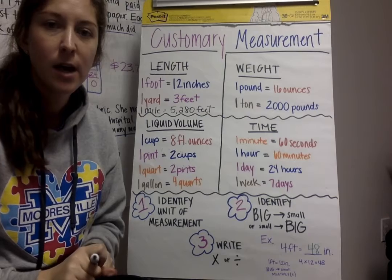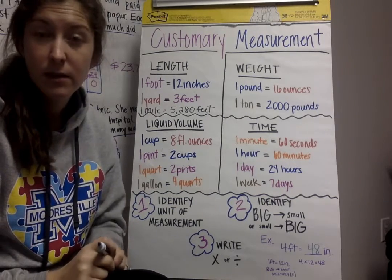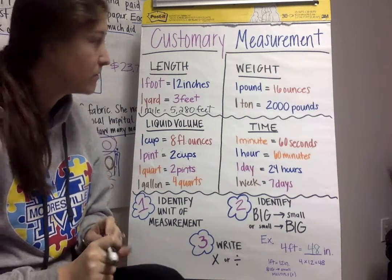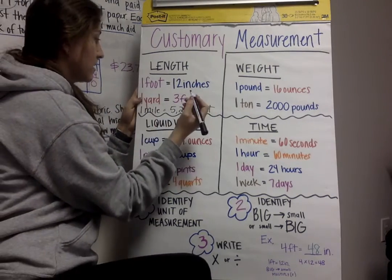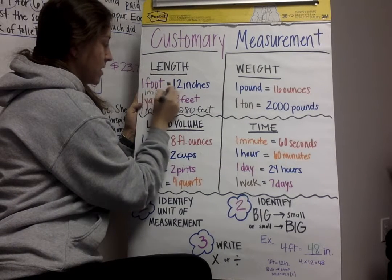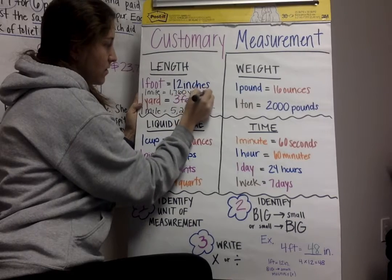So there's also one mile, there's 1,760 yards in a mile. So that's also something that you'll need to know. Let me add that one in there. One mile equals 1,760 yards.